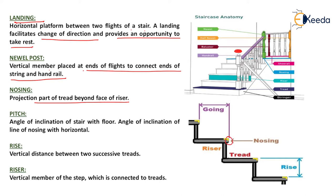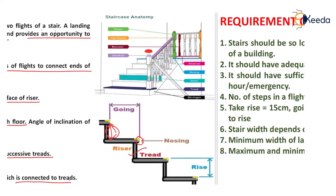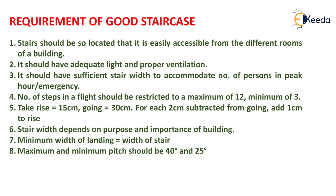Nosing is the projecting part of the tread beyond the face of the riser. Pitch is the angle of inclination of the stair with the floor — the angle of inclination of the line of nosing with the horizontal is the pitch. Rise is the vertical distance between two successive treads. Riser is the vertical member of the step which is connected to the tread.